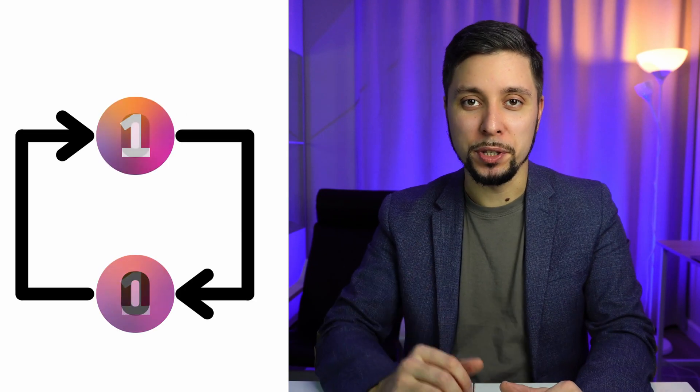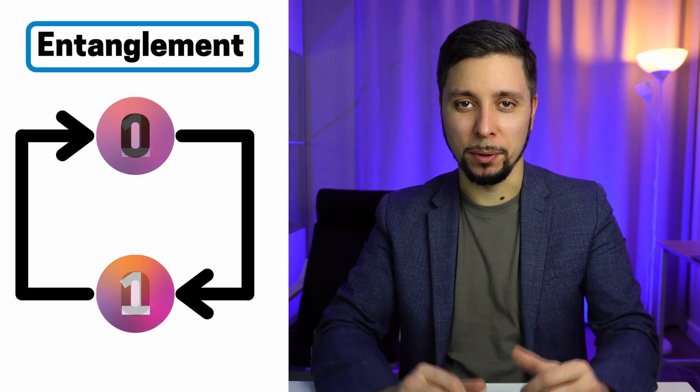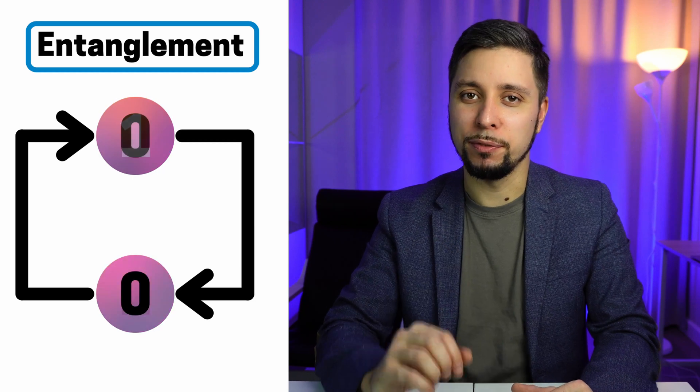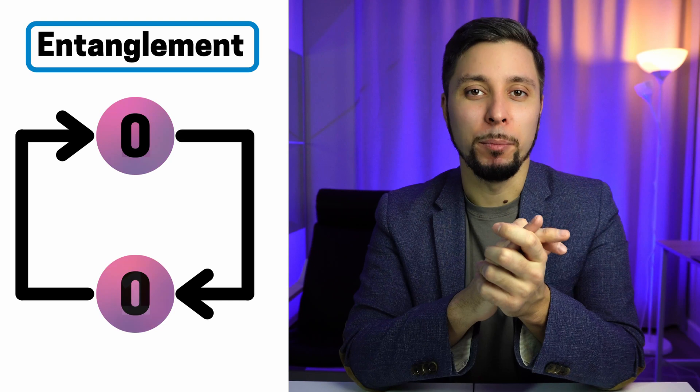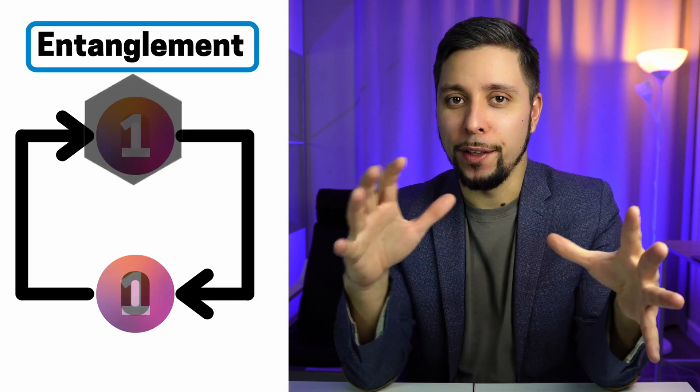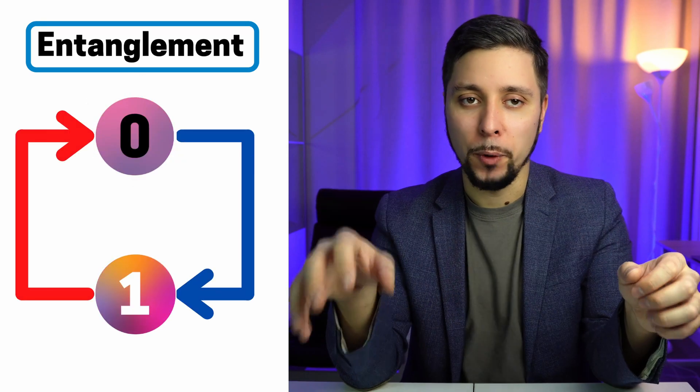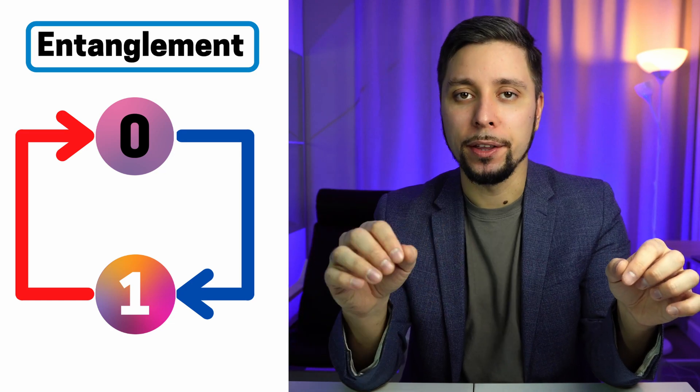The other property that qubits have is called entanglement. It is a really intuitive property and we can understand it as a communication system between qubits — no matter how far apart they are, when we access the value of one qubit we can indirectly access the value of other qubits. By cleverly exploiting superposition and entanglement, we can build a system much more powerful than current classical computers, and we can increase computations exponentially by adding extra qubits.